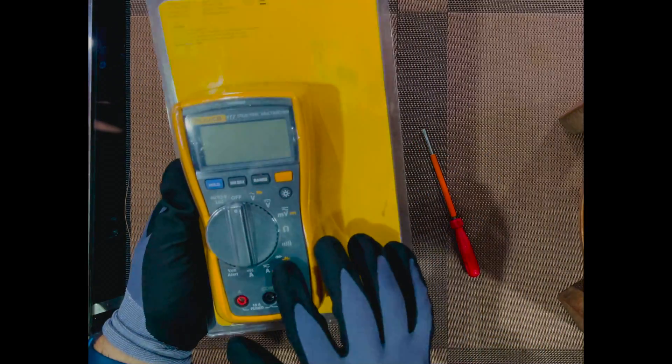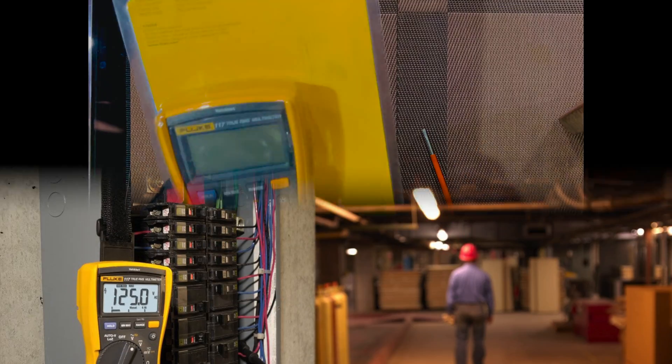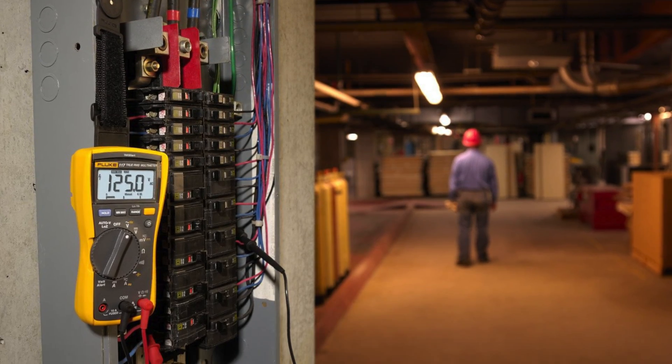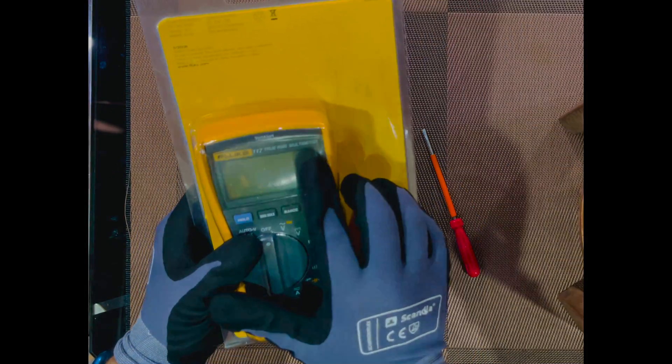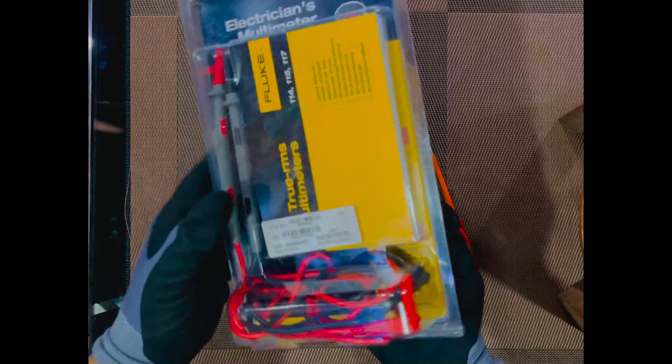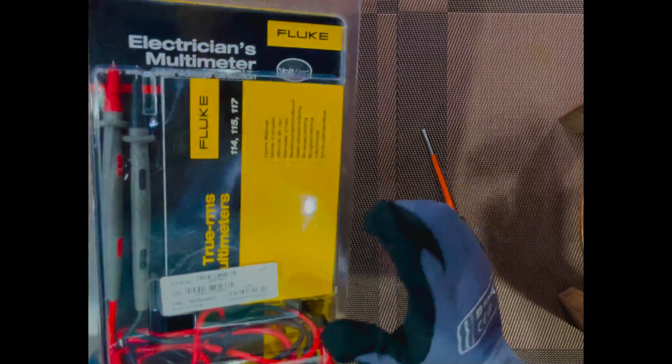If you see this is the multimeter which we have used on board ships, every single ship. This is the Fluke 117 true RMS multimeter.